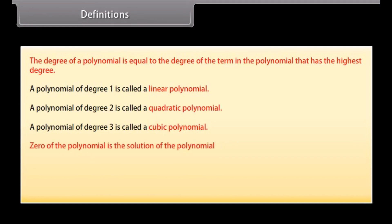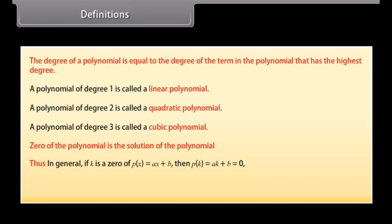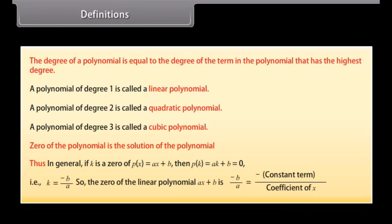The zero of the polynomial is the solution of the polynomial. Thus, in general, if k is a zero of p(x) which equals ax plus b, then p(k) equals ak plus b, which equals 0. That is, k equals minus b upon a. So, the zero of the linear polynomial ax plus b is minus b upon a, which equals minus constant term upon coefficient of x.